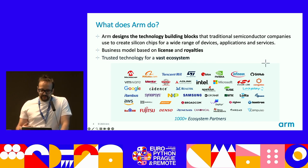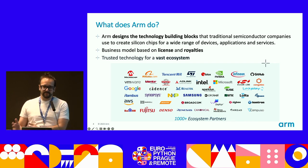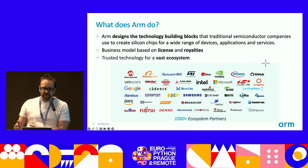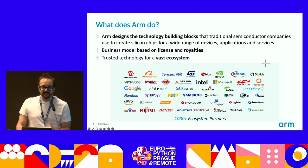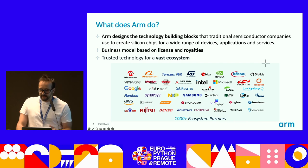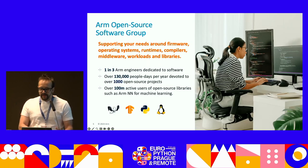Besides the designs, ARM provides software and tools for supporting the ecosystem. As an intellectual property company, the business model is based around licensing given to customers to use specific IP. Once the customer creates a product, ARM receives a fee for every product sold — these are called royalties. Finally, ARM has a huge ecosystem of partners, which is critical for its success. You can recognize some big names there, and some of them are here at PyCon as well.